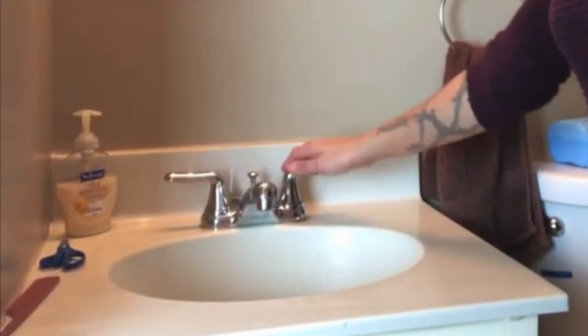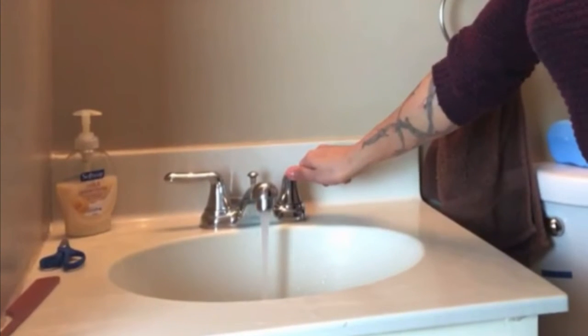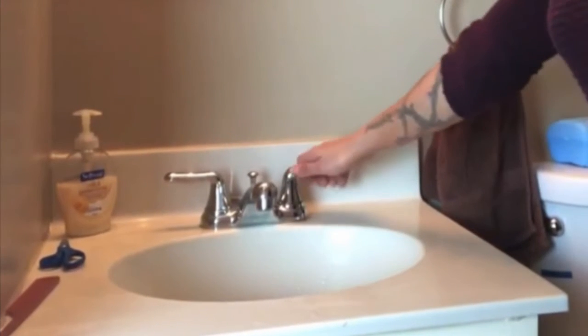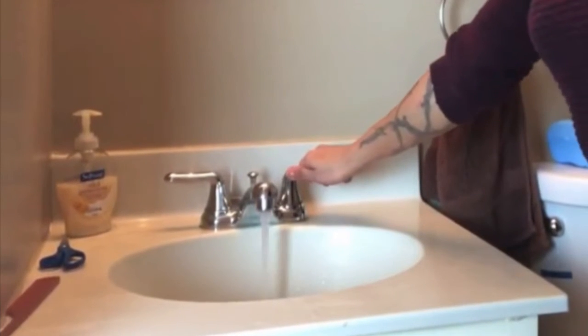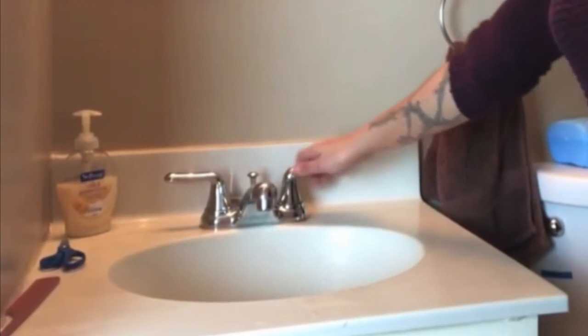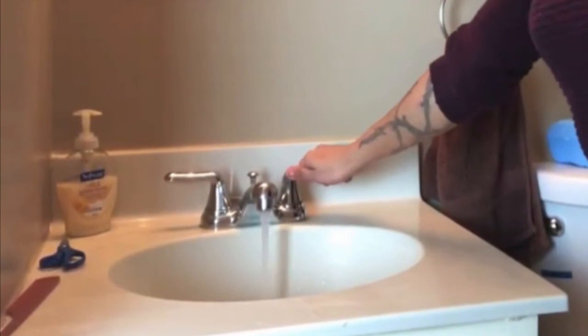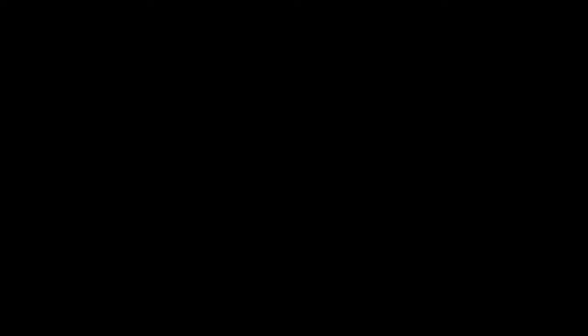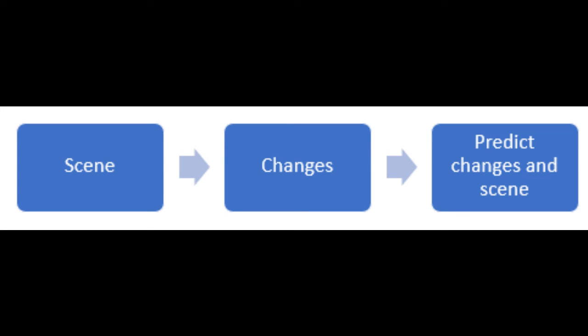The person then turns on the sink and water runs from the faucet to the drain. You could imagine something that looks like this, or it could have looked a bit different, but we can understand the story through communication with the English language. After you are given the imagery of the scene, you know that the imagery remains the same when you are told that the only difference is that the faucet is turned on.